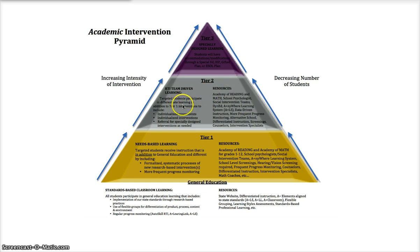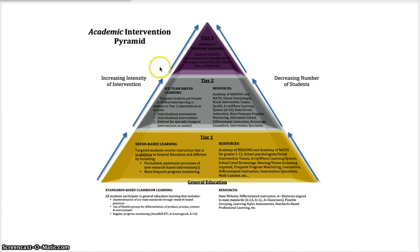In Tier 2, target students participate in differentiated learning in addition to Tier 1 interventions, to include individualized assessments, individualized interventions, and referral for specially designed interventions as needed. It increases the intensity of the intervention and obviously decreases the number of students, because fewer students qualify for this. We still have all the original resources, but then we look at individual assessments to make sure the student is progressing appropriately and what specific problems they seem to be having.